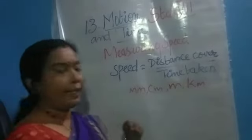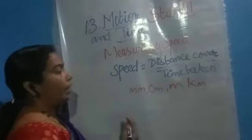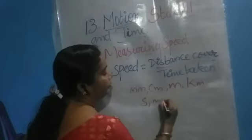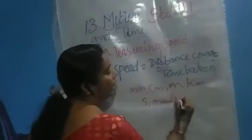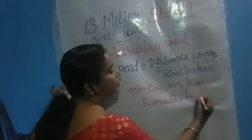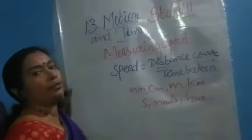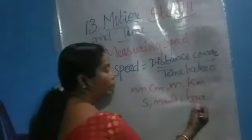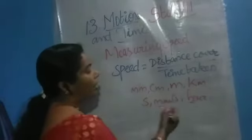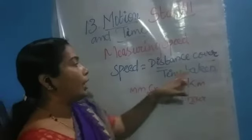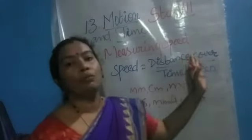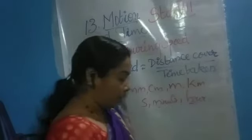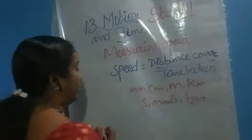Similarly for time taken, the units are seconds, minutes, and hours. For larger time we use hours, and for smaller time we use seconds or minutes. According to the unit used, we must change the units of the other quantities accordingly. For speed, we normally take distance in metres and time taken in seconds.